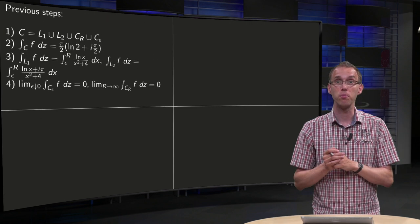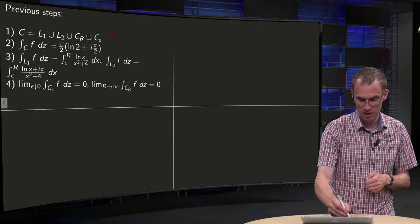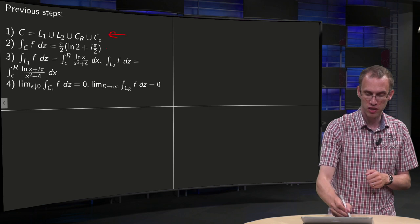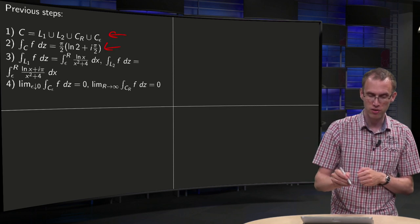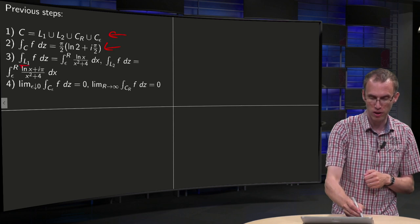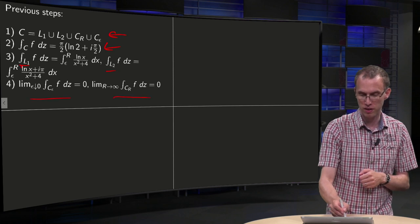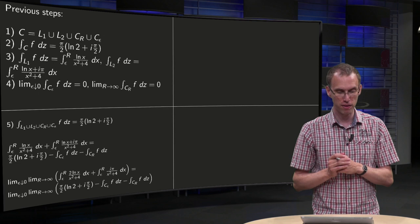Then just to summarize all previous steps. In step 1 we said C is the combination of those parts, we computed in the second step the integral along the total C, then in the third step we computed the integrals along L1 and L2, and in the fourth step we showed that those limits over here equal zero. And now we are ready to wrap up everything.